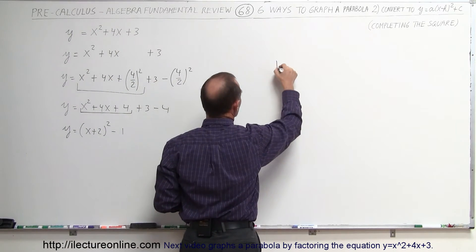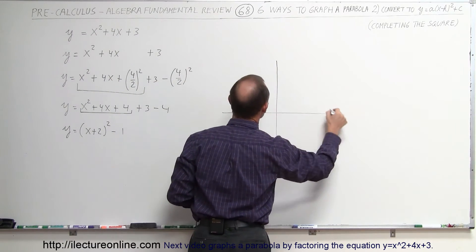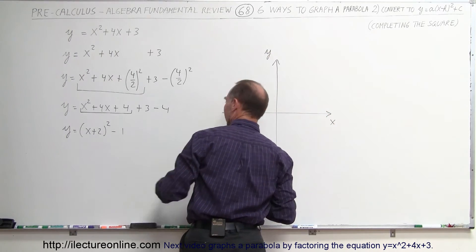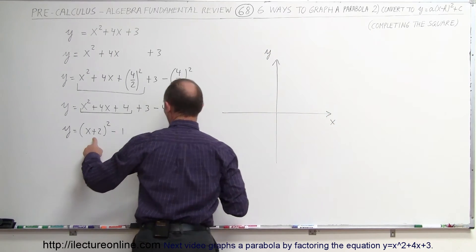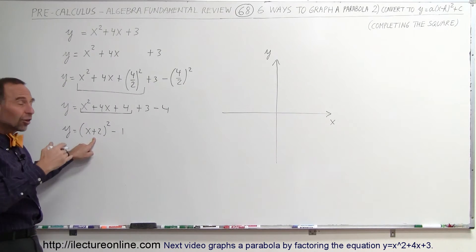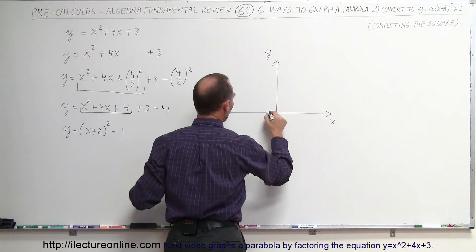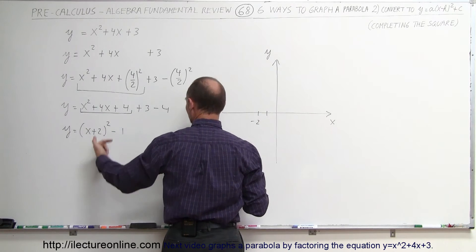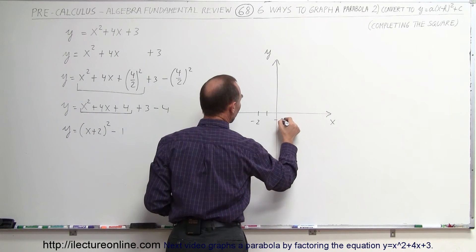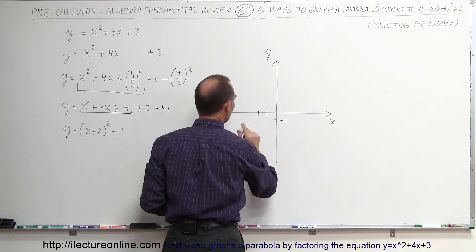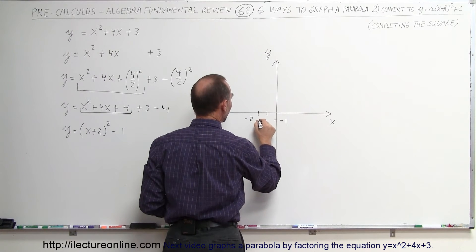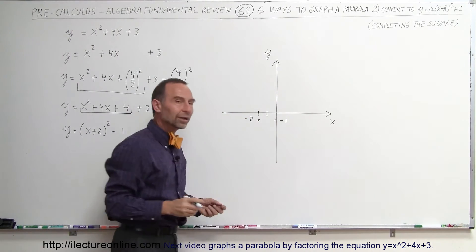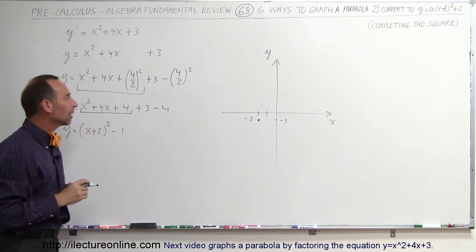This looks like that general form where we can very easily graph it, because we know the vertex of the parabola will be shifted two units to the left and one unit down from the origin. Here is our xy axis. We're shifted to the left — remember, when this is a plus, the shifting is to the left — so we're shifted left two units to −2, and then shifted downward one unit to −1. So the vertex of the parabola is at (−2, −1).